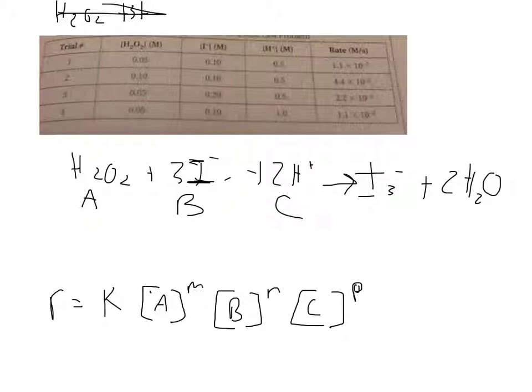How do I determine what M, N, and P are? You look at your initial concentration and find a place where it has doubled but the other two have remained constant. So H2O2 doubles here to 0.1 and these two have remained constant. But look, my reaction rate went up four-fold.